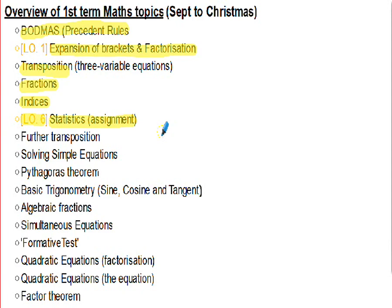I also gave you a statistics assignment for outcome six, where you looked at statistics yourself — basic calculation of mean, mode, and median, and standard deviation. You reviewed calculating measures of dispersion, the spread of the data. You also looked at drawing pie charts, bar charts, and histograms. That exercise is part of your revision process now.